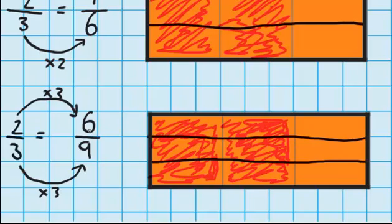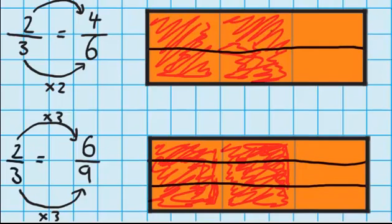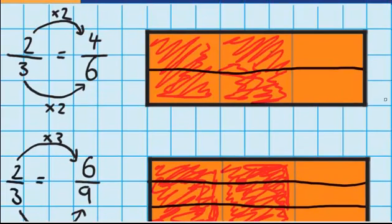So you can see from this that you make equivalent fractions by multiplying or dividing the numerator and the denominator by the same amount. Here we did it by three to move it into ninths, and at the top we multiplied both the numerator and the denominator by two to get it into sixths.